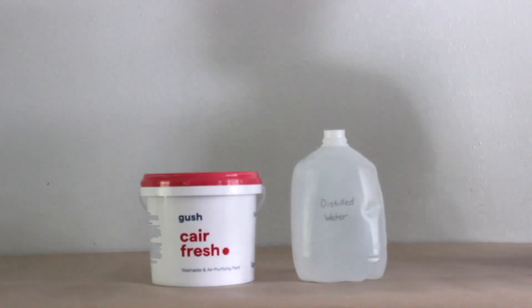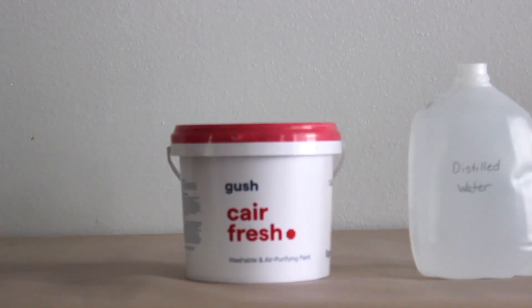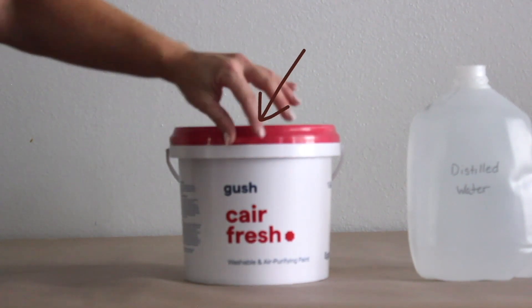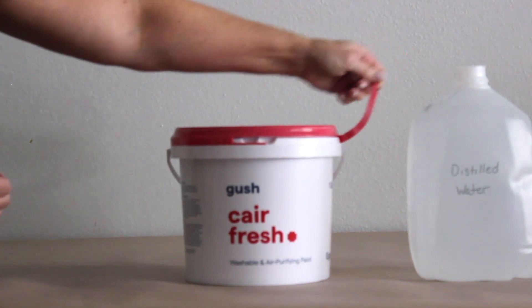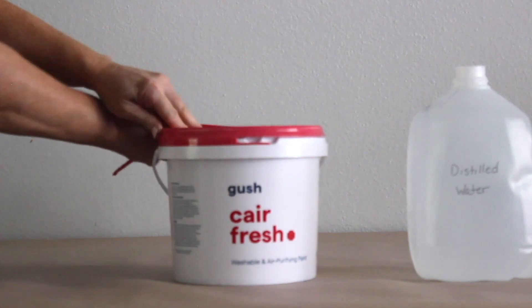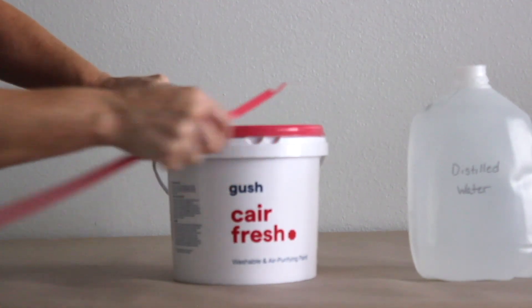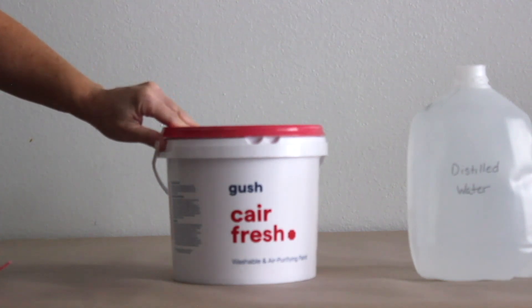Let me show you how to properly open Gush. There is a tab here, you just pull that and peel it all the way around. What is very unique and user-friendly about the Gush paint buckets is that there are two little finger marks to easily open the paint.